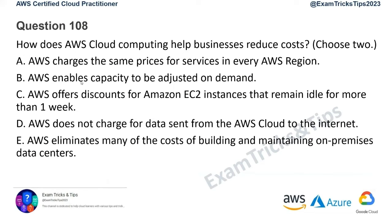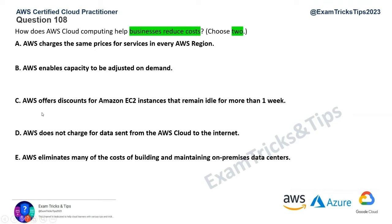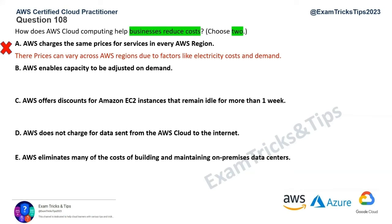Question 108: how does AWS cloud computing help businesses reduce cost? Select two options. Option A — AWS charges the same price for services in every AWS region — that's not correct. Pricing differs by region depending on the economy of the country. For example, pricing for the US region is much more costly than the India region due to cost of living and labor. So option A is wrong.